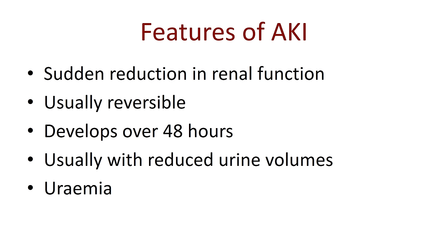Urea is a waste product that contains nitrogen. Cells in the body metabolise proteins and produce waste nitrogen, which goes into the blood as ammonia — a very alkaline and toxic substance. When ammonia first passes through the liver, the liver converts it into urea, which is still nitrogen-containing but soluble and relatively non-toxic. In renal failure, the kidneys can no longer excrete the urea, so the amount of urea in the blood builds up — this is called uraemia.